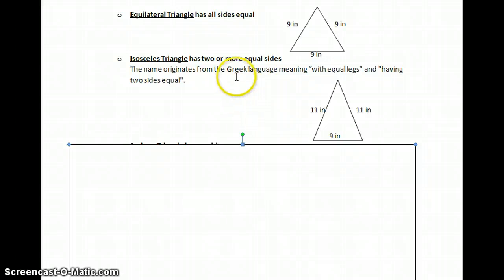So, by definition, two or more equal sides. This means an equilateral triangle is a special type of isosceles triangle.